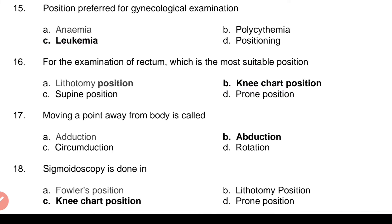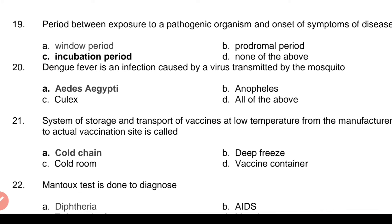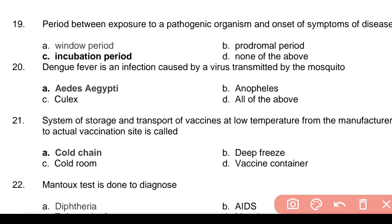Question 17: Moving a joint away from the body is called — Answer: b. Abduction. Question 18: Sigmoidoscopy is done in — Answer: c. Knee-chest position. Question 19: Period between exposure to a pathogenic organism and onset of symptoms of disease — Answer: c. Incubation period.